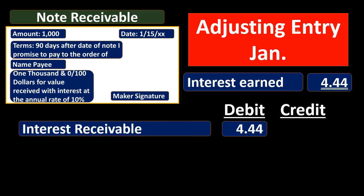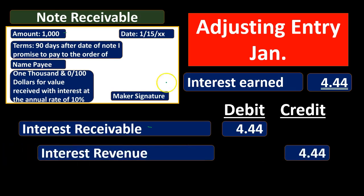To record the adjusting entry we debit interest receivable for $4.44. We already have notes receivable on the books at $1,000 from when we first recorded it — we don't add the interest into the notes receivable itself. Instead we use a separate account called interest receivable to accumulate the interest related to this note. It's an asset with a debit balance, so we increase it with a debit. Then we credit interest revenue for $4.44 — we haven't received cash yet but we did earn this interest. Interest revenue is a revenue account with a credit balance, and increasing it with a credit increases net income.